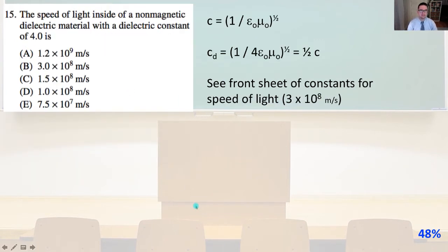Number 15. The speed of light inside a non-magnetic dielectric material with a dielectric constant of 4.0 is, well, we know that C, the speed of light, equals 1 over the square root of epsilon naught mu naught. And where epsilon naught is the electric constant and mu naught is the magnetic constant.